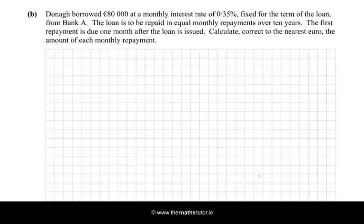Donna borrowed 80,000 at a monthly rate of 0.35% fixed for the term of the loan from Bank A. The loan is to be repaid in equal monthly repayments over 10 years. The first repayment is due one month after the loan is issued. Calculate correct to the nearest euro the amount of each monthly repayment. Well, if you're looking for equal repayments, the best formula to use is your amortisation formula.